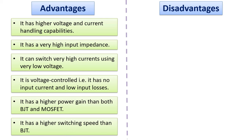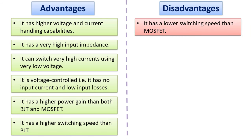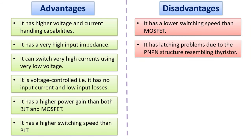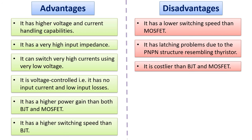Disadvantages? It has a lower switching speed than a MOSFET. It has a locking problem due to its PNPN structure resembling a thyristor, and it is more costly than both BJT and MOSFET.